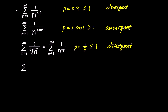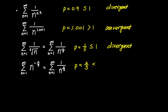How about this one? The sum of n to the power of negative 2 over 3 as n goes from 1 to infinity. In this problem, the p-value is 2 over 3, which is also less than 1. Therefore, according to the p-series test, it diverges.